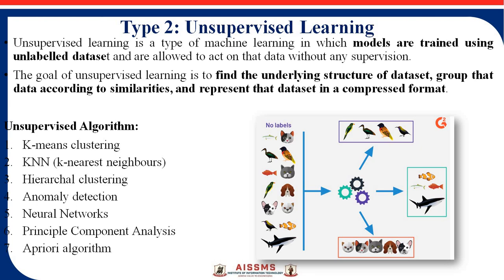Unsupervised learning uses an unlabeled dataset for training purposes. As we discussed, supervised learning uses a labeled dataset — for example, an image labeled as 'circle.' But unsupervised learning is the opposite; it uses an unlabeled dataset. The machine identifies images and generates results based on their patterns and features, or clusters them. The goal of unsupervised learning is to find the underlying structure of the dataset, group it according to similarities, and represent it in a compressed format.